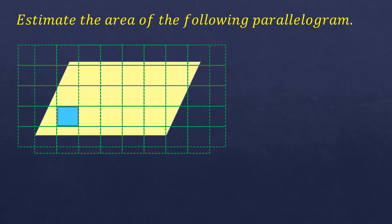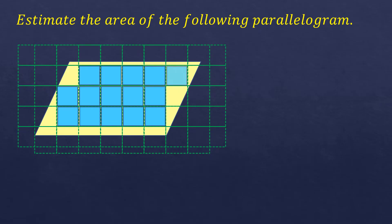Counting the fully shaded squares: 1, 2, 3, 4, 5, 6, 7, 8, 9, 10, 11, 12, 13, 14, 15. There are 15 fully shaded squares.